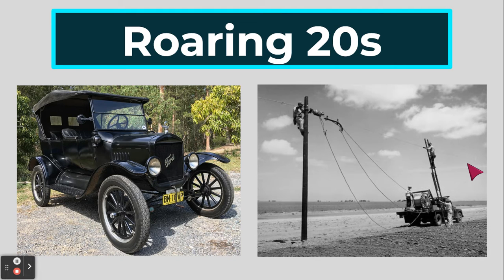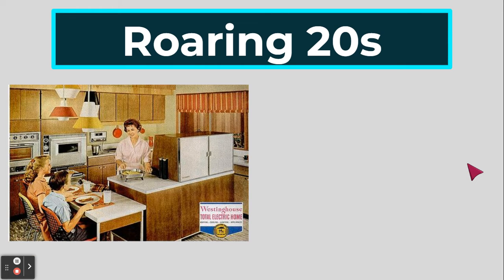Also at this time, we had electrification, where there was more access to electricity across America. This was especially important in rural areas, where they did not have any electricity until the 1920s. Now they could get new appliances like the ones you see in this advertisement — electric stoves, electric dishwashers, electric coffee pots, electric pans — things that made life easier, simpler, and more efficient, especially for women who would have had to wash clothes by hand before. Now they could throw clothes in the washing machine and go do something else.